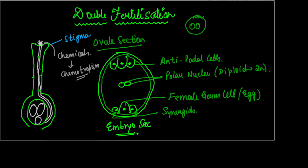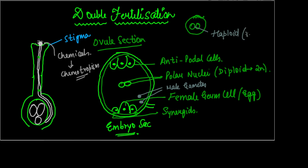These two male gametes travel down the pollen tube, enter the ovary, and enter an ovule. Inside the embryo sac of that ovule, the two male gametes enter. Each male gamete is haploid — it has half the number of chromosomes, only n.